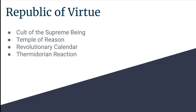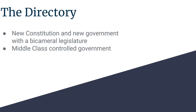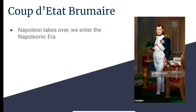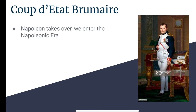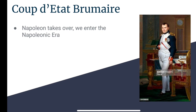After this, the Thermidorian Reaction ended the Reign of Terror, and the Directory took the stage. Within the Directory came a new constitution and a new republican form of government, and this was a middle-class controlled government. This didn't last very long, but it did contain a bicameral legislature, which could be argued to have been influenced by the American form of government. After this, there was a coup d'état brumaire, which was basically led by Napoleon, and that took us to the Napoleonic — or consulate — era.